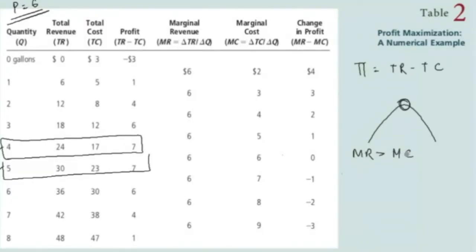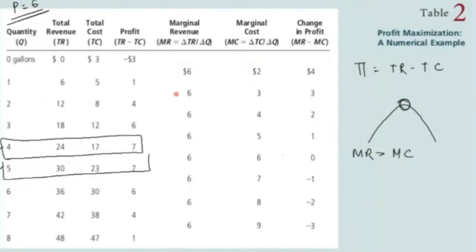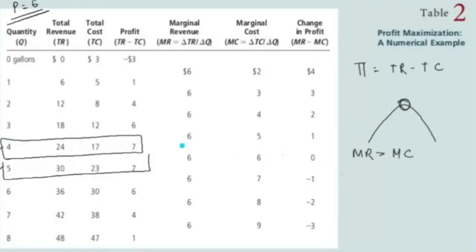Marginal revenue tells you how much your revenue changes if you produce an extra unit, and marginal cost tells you how much your cost changes if you increase production by one unit. Without applying economics, it is quite obvious that as long as marginal revenue is greater than marginal cost — as long as extra production brings in more revenue than the cost you put into it — you will continue production. At the first unit, marginal revenue is six and marginal cost is two, so you decide to produce it.